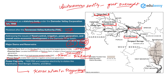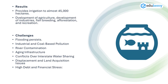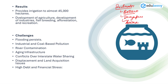As Damodar Valley Corporation was set up in 1948, it has brought huge benefits for the region. This project has led to the development of numerous industries nearby — you might have heard about Bokaro Steel Plant, Durgapur Steel Plant, Asansol, and Chittaranjan. These are places known for heavy basic industries, and all this is attributed to the establishment of Damodar Valley Corporation. Without it, these industrial developments would have been completely impossible.